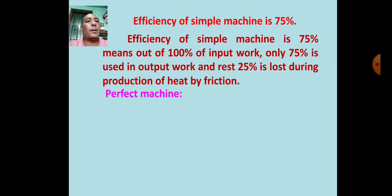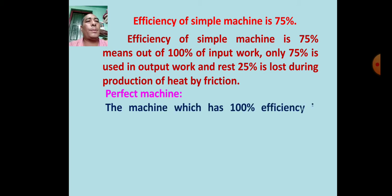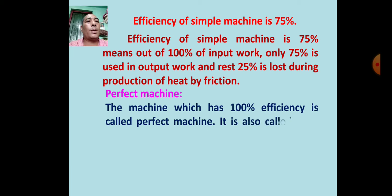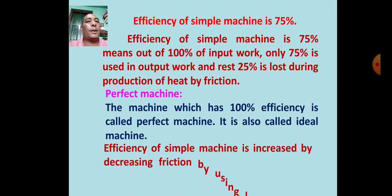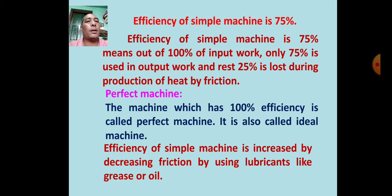The machine which has 100% efficiency is called a perfect machine, also called an ideal machine. The efficiency of a simple machine is increased by decreasing friction using lubricants like grease or oil.